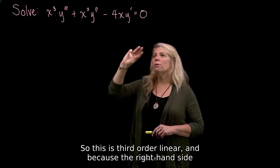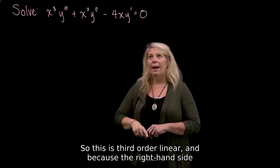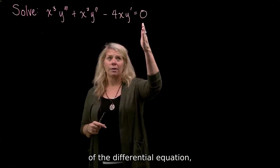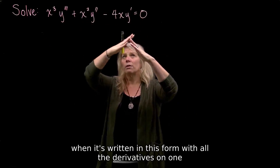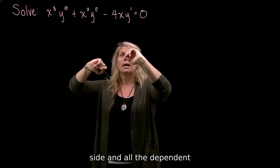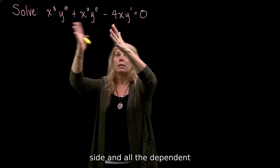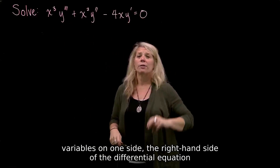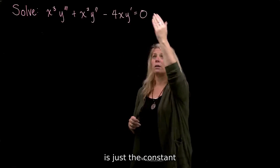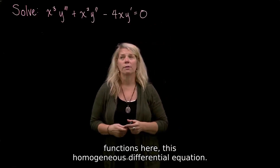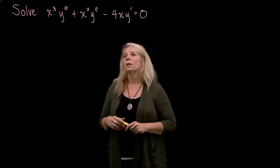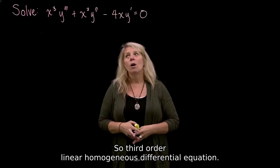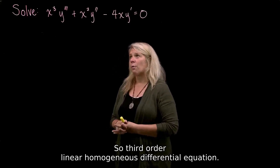This is third order linear, and because the right-hand side of the differential equation — when written with all the derivatives and dependent variables on one side — is just the constant function zero, this is a homogeneous differential equation. So: third order linear homogeneous differential equation.